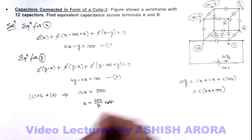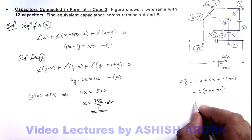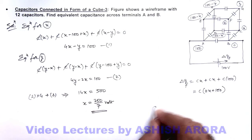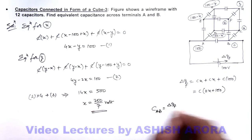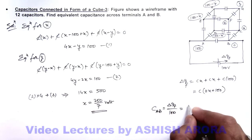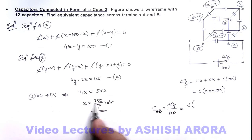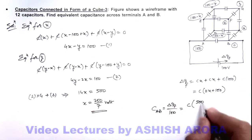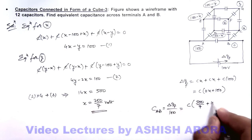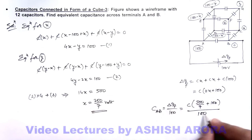So this value of x we can put it over here, so this will give us the value of delta q and C across terminals A and B we can write delta qf by 100. So this C multiplied by this 2x, means this will be 500 by 7 plus 100 divided by 100. Here this 100 gets cancelled out and the result I am getting for C_AB is 12C by 7, that is the answer to this problem.